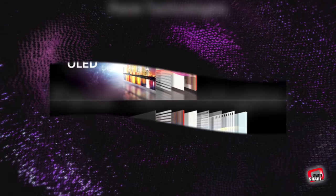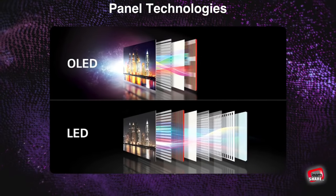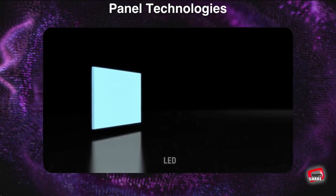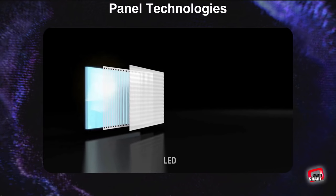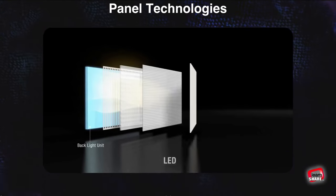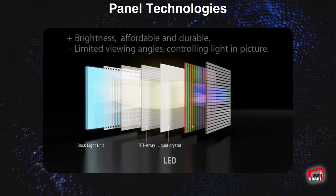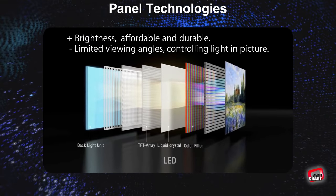Both are important variations on the LCD industry. LCD LED TVs use panels of liquid crystal pixels illuminated by external light sources. The advantages of LCD TVs are the brightness, the affordability, and durability. Their main disadvantages are limited viewing angles and difficulties controlling light in the picture.